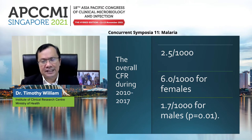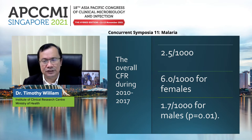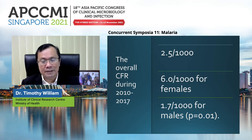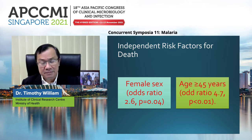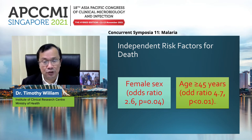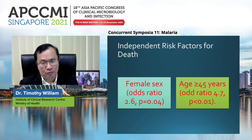The overall case fatality rate from 2010 to 2017 was 2.5 per 1,000. Females had a higher case fatality rate of 6 per 1,000 compared to 1.7 per thousand for males. The independent risk factors included female sex (odds ratio 2.6) — we don't really know why, it may be due to hormonal differences. Age is also a factor; the older the person, the higher the risk of dying from P. knowlesi — the odds ratio for patients over 45 years old was 4.7.